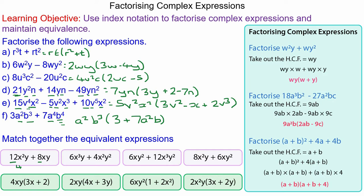The common factor of 12 and 8 is 4, so this must match the one below it, because no other term has a 4 on the outside. The common factor of 6 and 4 is 2, and of x cubed and x squared is x squared, so it must match the one to the far right. The highest common factor of 6 and 12 is 6, and of x and x cubed is x, so that must be the one below it. And finally, the highest common factor of 8 and 6 is 2, and of x squared and x is x, so that must match this one.